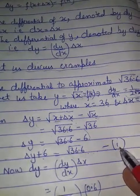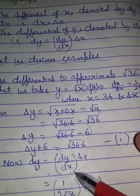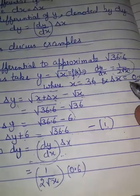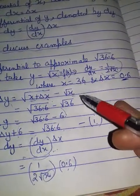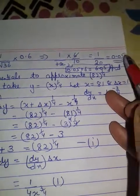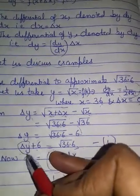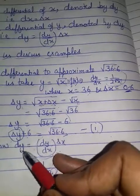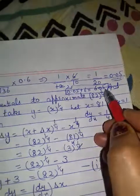Now dy = (dy/dx) · delta x. We already calculated dy/dx, and delta x = 0.6, and x = 36. Putting the values in: dy = (1/(2√36)) · 0.6 = 0.6/12 = 1/20 = 0.05. So delta y = 0.05. Therefore √36.6 = delta y + f(x) = 0.05 + 6 = 6.05. That is your answer.